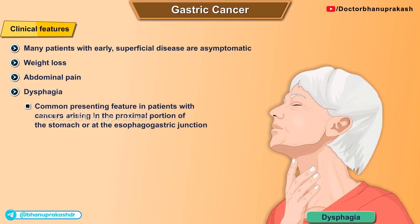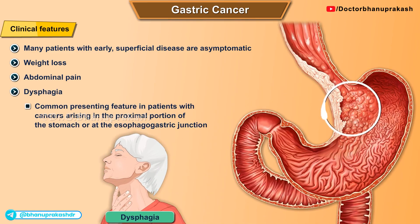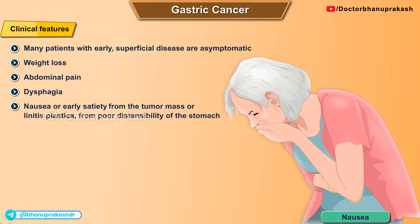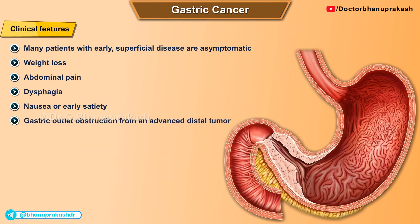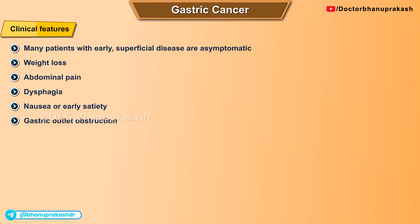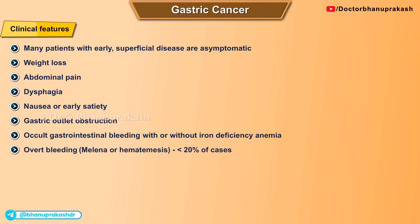Dysphagia is a common presenting feature in patients with cancers arising in the proximal stomach or at the esophagogastric junction. Patients may also present with nausea or early satiety from the tumor mass, or in cases of linitis plastica — an aggressive form of diffuse-type gastric cancer — from poor distensibility of the stomach. They may also present with gastric outlet obstruction from an advanced distal tumor. Occult gastric bleeding with or without iron deficiency anemia is not uncommon, while overt bleeding such as melena or hematemesis is seen in less than 20 percent of cases.